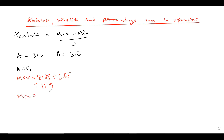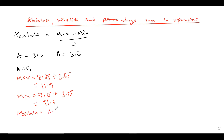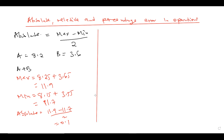You also get the minimum value of this operation. If you remember from the previous lesson, it would be minimum of A plus minimum of B, which is 8.15 plus 3.55. Adding these two numbers gives you 11.7. So if you want to get the absolute error in this operation, absolute error will be: maximum (11.9) minus minimum (11.7), then divide by 2. The answer is 0.1. This is the value of absolute error of this addition operation.